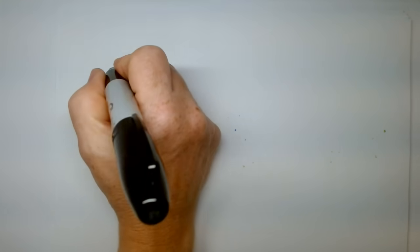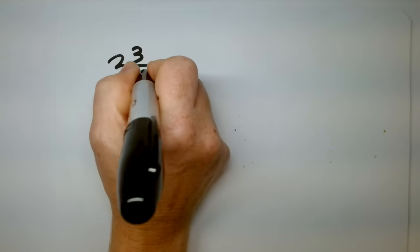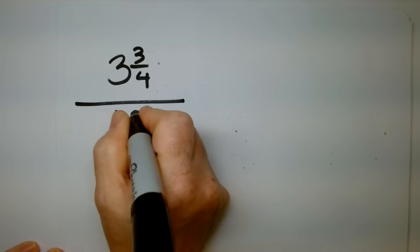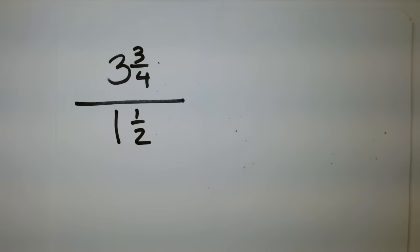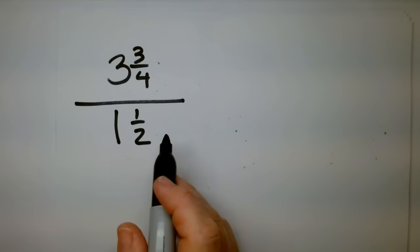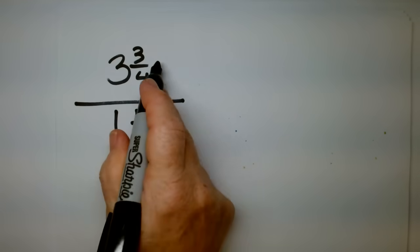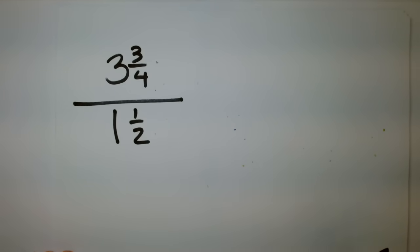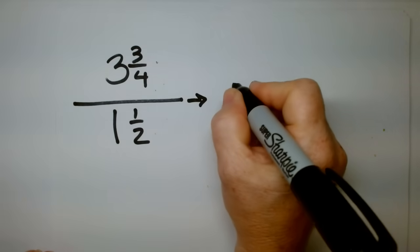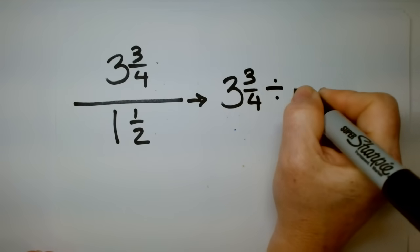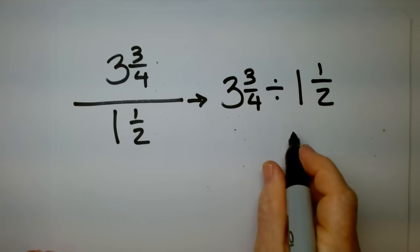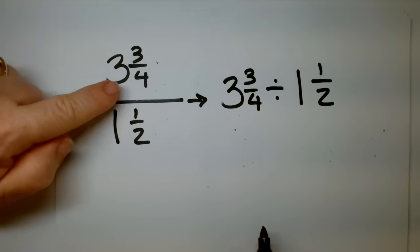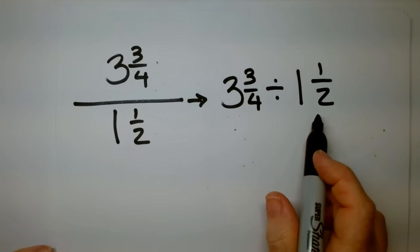What if I have this going on? I have 3 and 3 quarters divided by 1 and a half. Now, what do we do? Panic. No, no, no. You don't panic. Do you remember how to turn this into a multiplication problem? This is as complicated as it gets. So here we go. This becomes 3 and 3 quarters divided by 1 and a half. I just rewrote the problem.